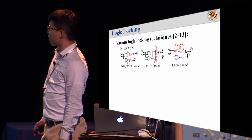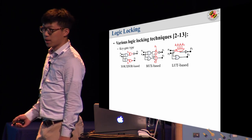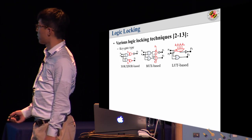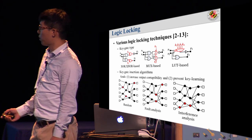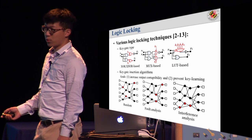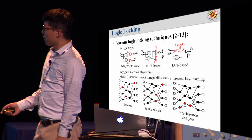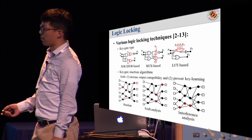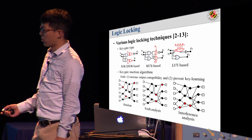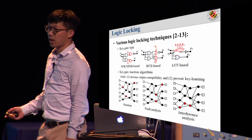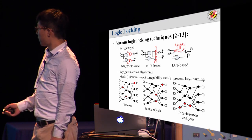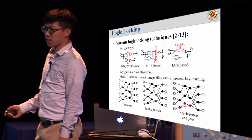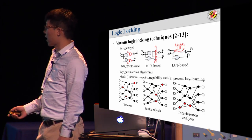Various logic locking techniques have been proposed. Based on key gate types, they can be classified into three main categories: XOR/XNOR-based, mux-based, and lookup table-based. Many key gate insertion algorithms have been proposed. The simplest way is to randomly distribute key gates into the netlist. A second method increases output corruptibility using a fault analysis-based insertion algorithm that inserts key gates at locations affecting many primary outputs. A third method is an interference analysis-based insertion algorithm that inserts key gates at secure locations that cannot be easily sensitized to primary outputs.